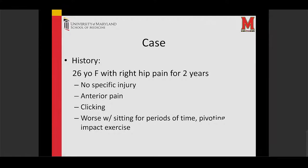I'll start with a case to display a typical scenario that I see a lot and is very common. A 26-year-old female with hip pain for years, no specific injury, gradual onset. The pain is anterior toward the groin, which is a very common location for true hip pain from intra-articular pain in the hip joint itself. She has some clicking, and her pain is worse with sitting, pivoting, and impact exercise.